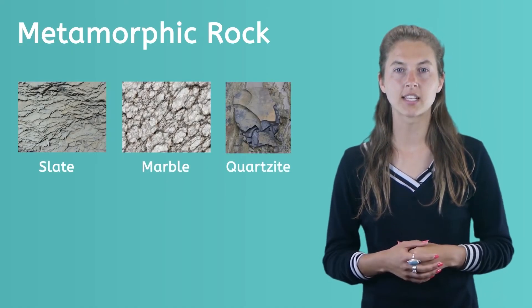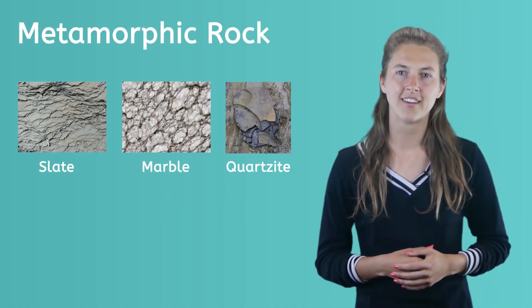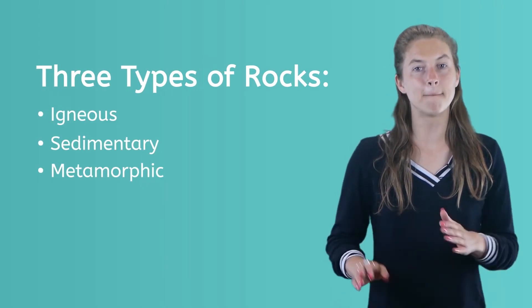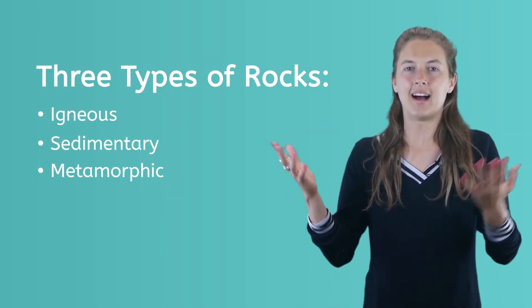Slate, marble, and quartzite are examples of metamorphic rock. When all three types of rocks—igneous, sedimentary, and metamorphic—melt completely, they become magma again.